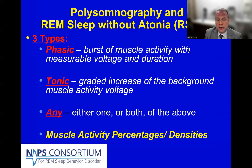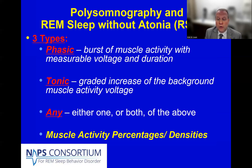There's also tonic muscle activity, which is a more graded increase of the muscle activity voltage background, or any muscle activity, which could be either one of these or both at the same time. This activity is tabulated by established scoring criteria, and then divided over the total REM sleep time to yield a percentage or density of abnormal muscle activity, which has proven very helpful for diagnosis, in that REM sleep behavior disorder patients have a lot of this activity, whereas normal controls have typically very little.